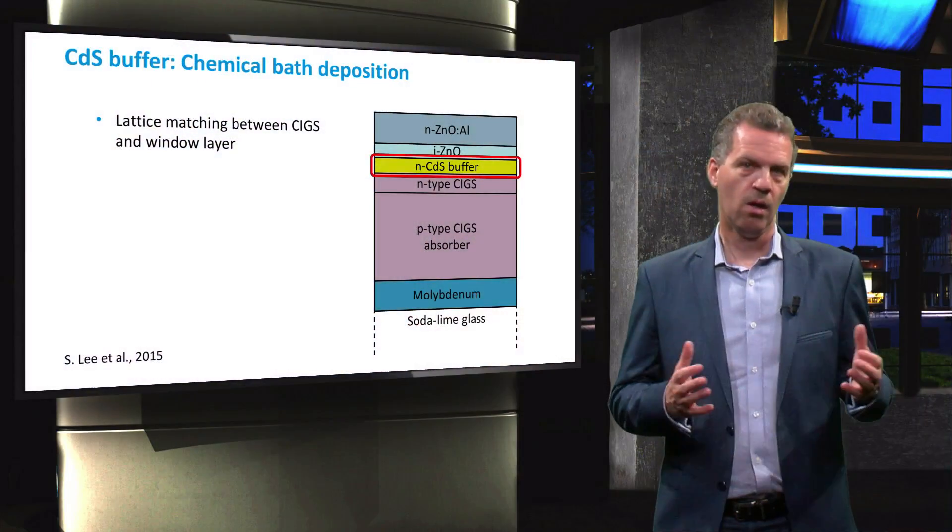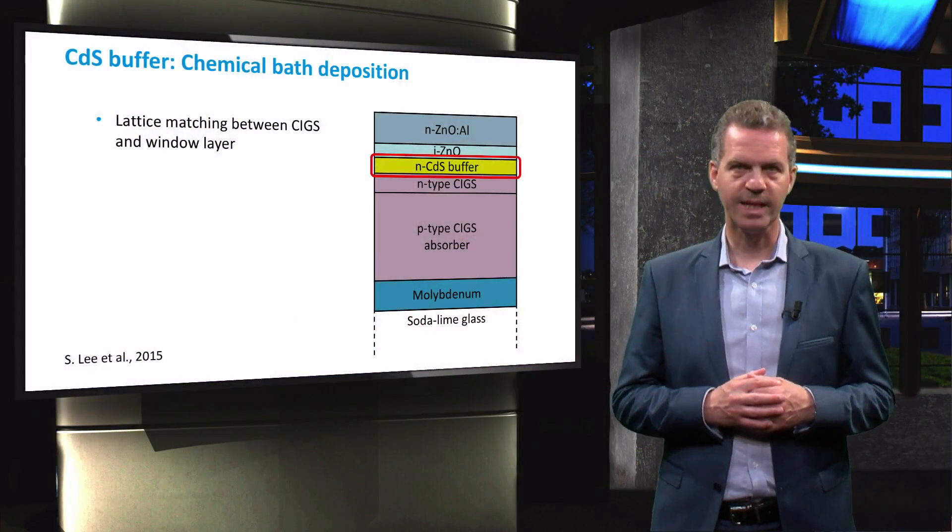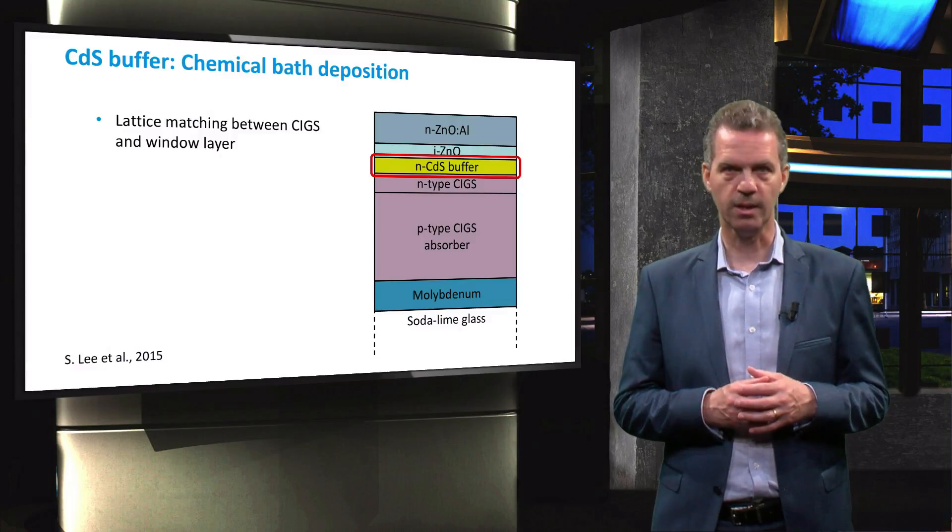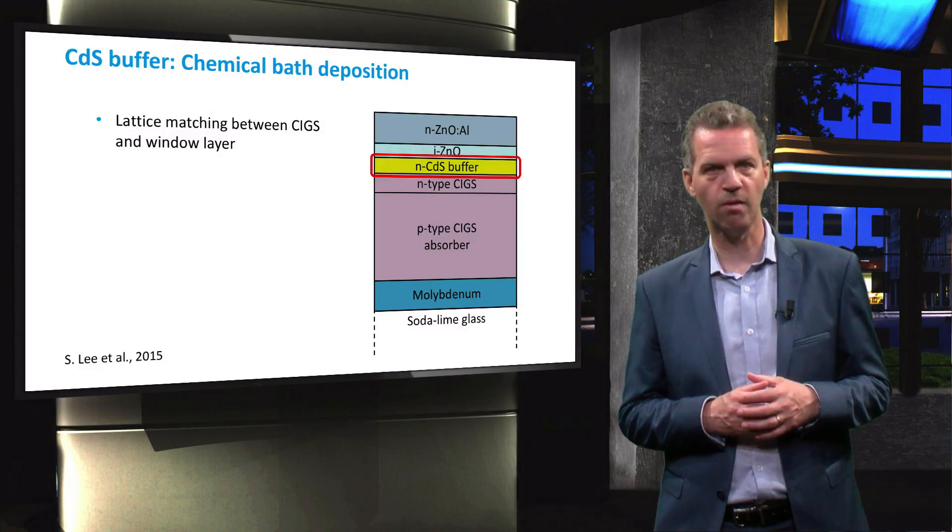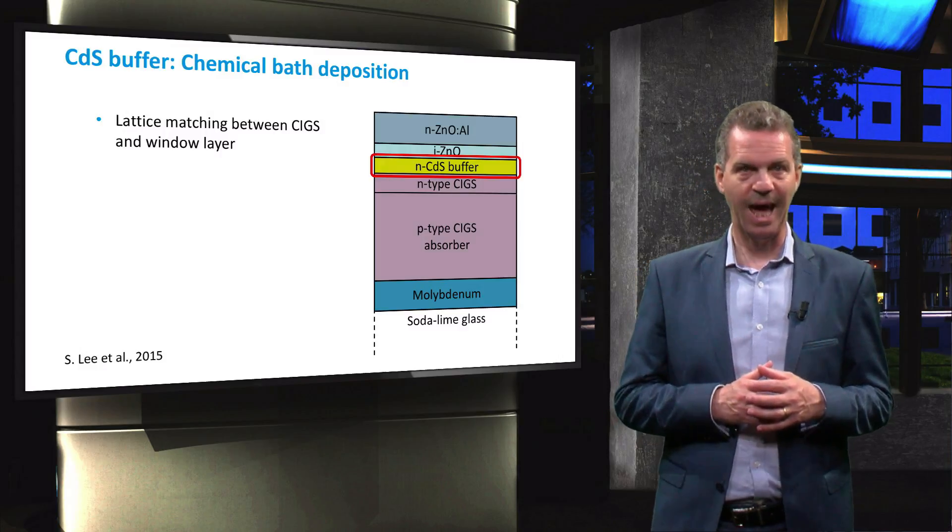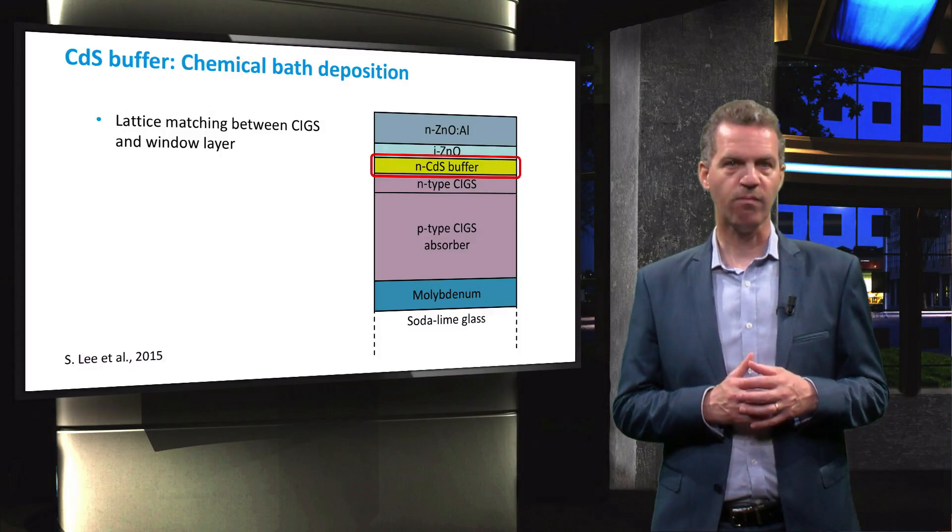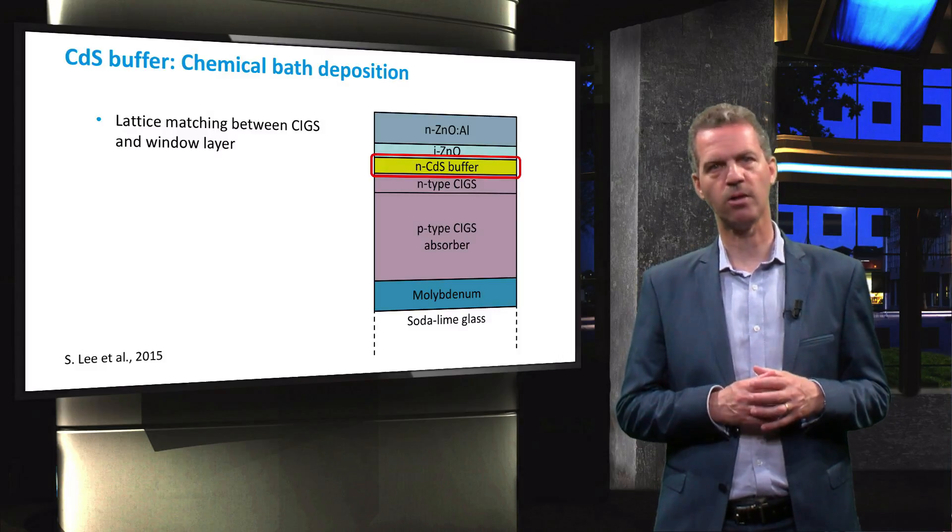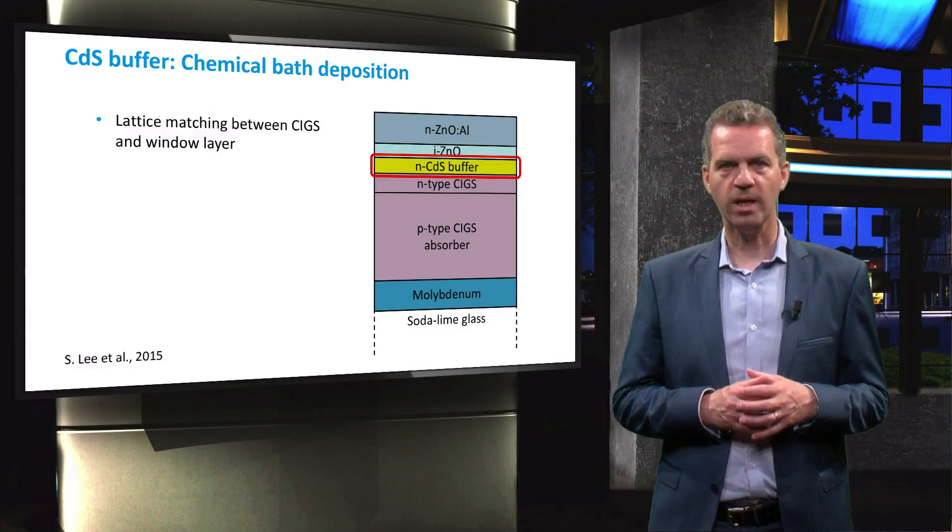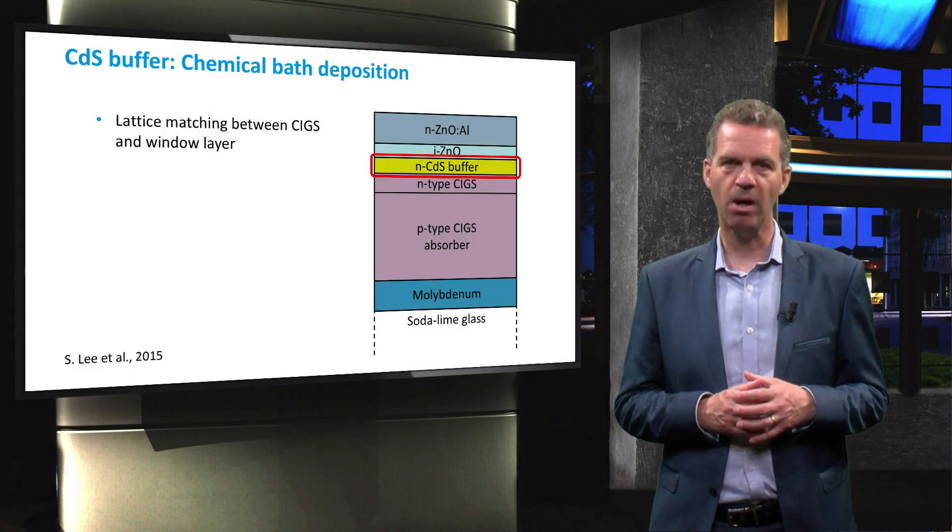Now that we have seen the structure of a CIGS solar cell and how a module can be produced with monolithic integration, we will briefly discuss the cadmium sulfide buffer layer. There is some debate about using the element cadmium in a solar cell because of its toxicity. Nevertheless, it is used in the traditional cell stack in the form of cadmium sulfide. This material is placed in between the N-type CIGS layer and the front TCO layer to provide lattice matching and hereby reduce the defect concentration. This is also the reason why the cadmium sulfide layer is referred to as a buffer layer.